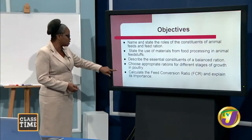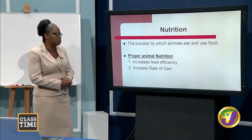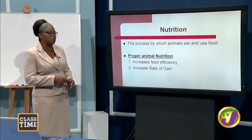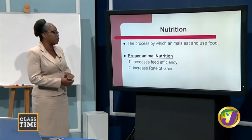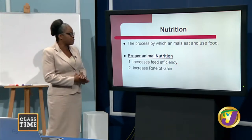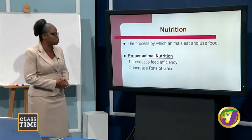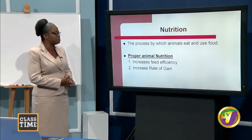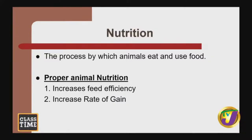We also want to look at how animal nutrition ties into your broiler SBA. By definition, nutrition is a process by which animals eat and use food. When animals have proper nutrition, they are able to increase feed efficiency and also increase rate of gain.